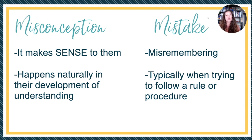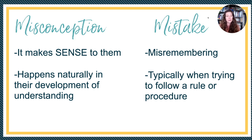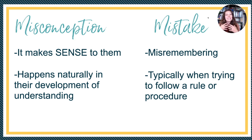Let me take a moment to describe the difference between a misconception and a mistake. Both often lead to a wrong answer, and so if we don't dig into how the students are thinking about it, we don't often know if it's a mistake or a misconception. A mistake is often when a child misremembers something like a fact or a procedure. It happens usually when they're trying to follow a rule and a procedure but don't remember the exact steps. Like sometimes when I see four times three, I think seven, just because I see four and three and I added instead of multiplying. That's a mistake.